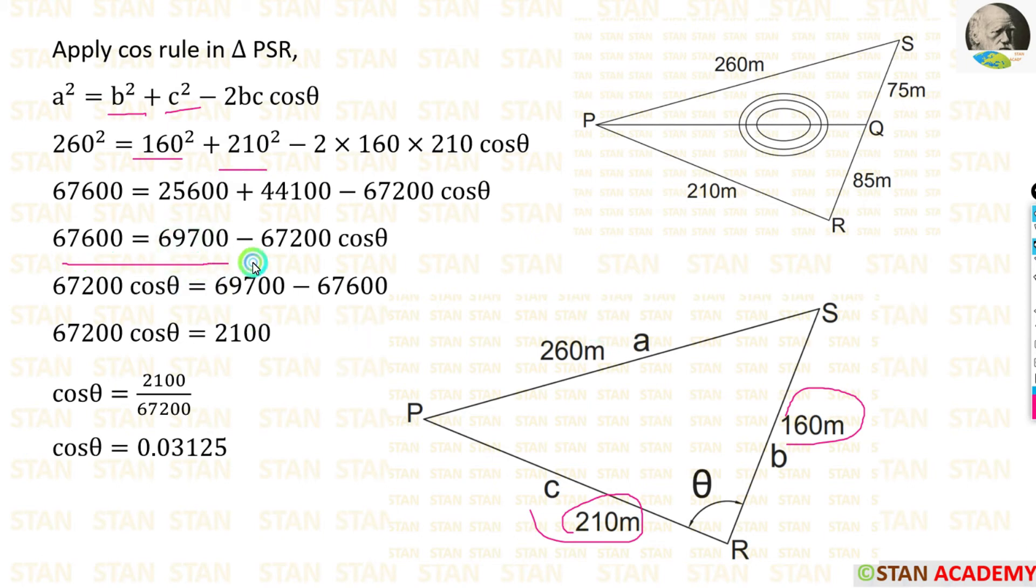After the calculation, we are getting this. Then we can take this -67200 cos θ on the left side, so it will become positive. Also we can take this 67600 on the right side, so it will become negative. Then we can take this 67200 on the right side. It will come in the denominator. Finally we are getting cos θ = 0.03125.